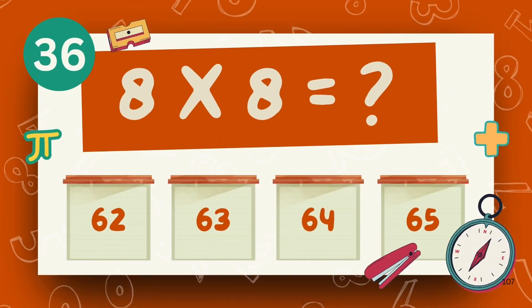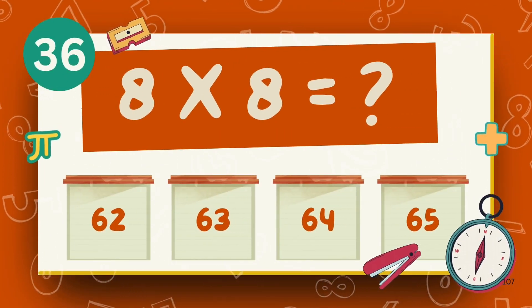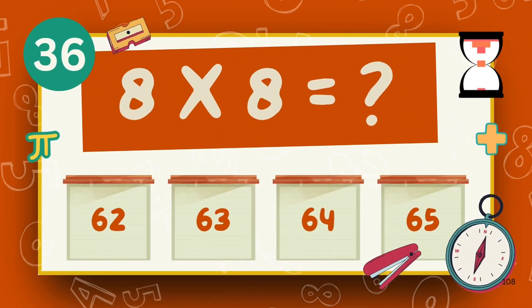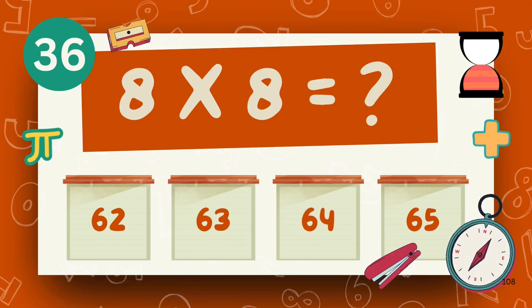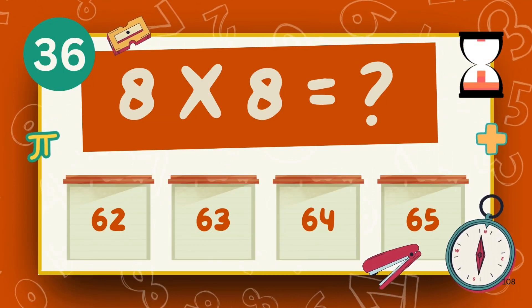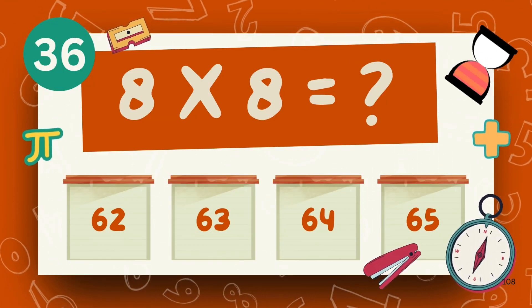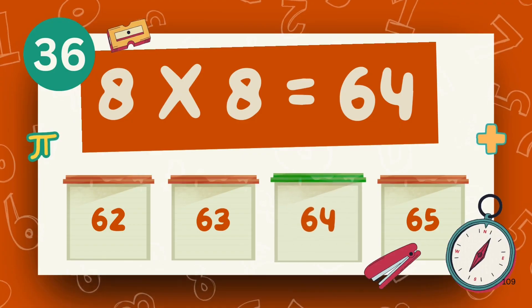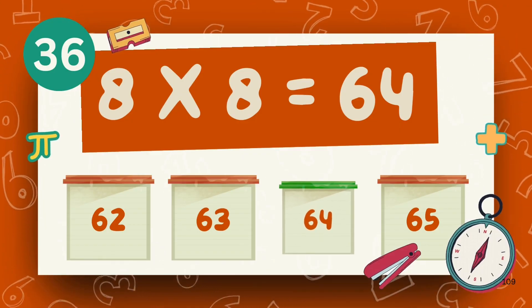What is 8 times 8? What is 9 times 8? The answer is 64.